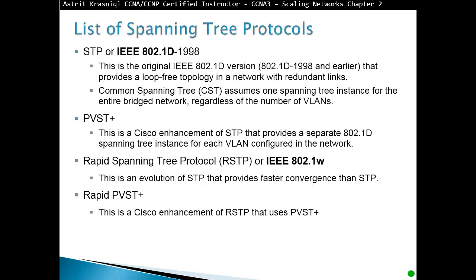Both types — Cisco and Open Standard — have advantages and disadvantages. Anything you see with 802.1 is Open Standard. So 802.1D is Common Spanning Tree and 802.1W is Rapid Spanning Tree. Because you have one Spanning Tree for the entire topology, one of the links will always be in blocking mode. The advantage is that you only have one Spanning Tree running, which is resource-efficient.